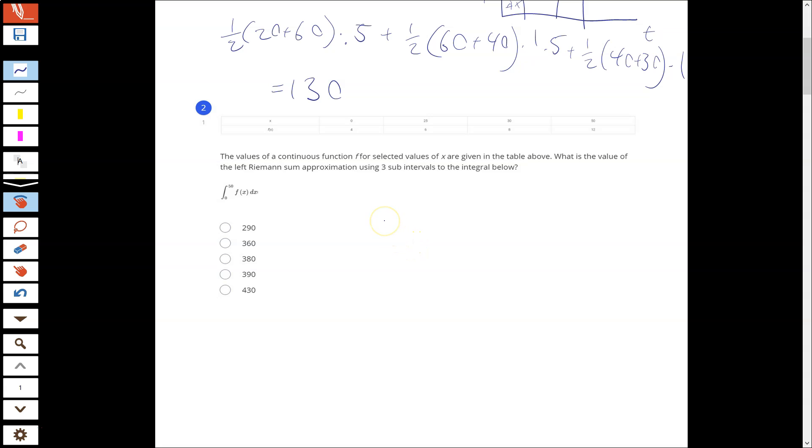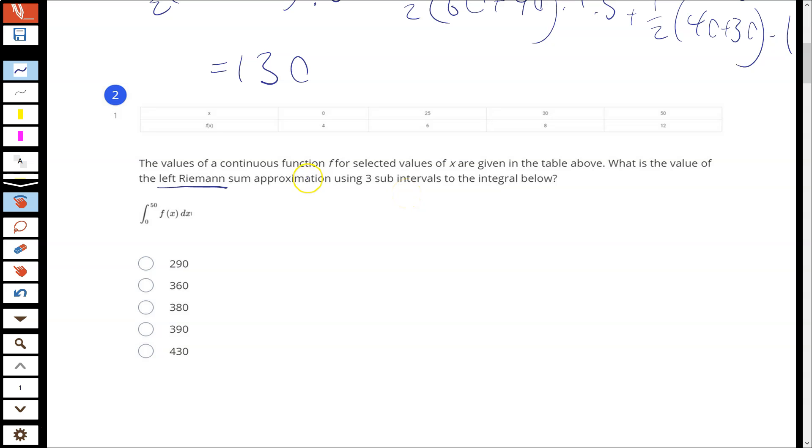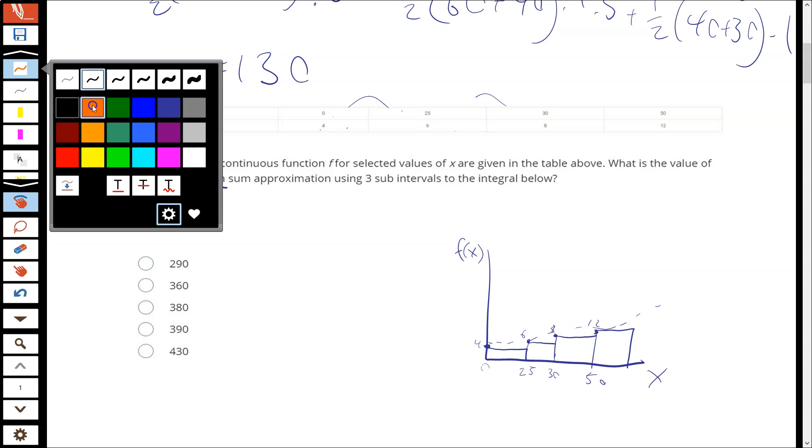Here we want a left Riemann sum. We're going to be making rectangles this time to estimate the area here, and we're going to use three subintervals. Notice it's the same kind as before - our three subintervals go with our four points. I'm going to make a sketch for this one. You don't have to make a sketch for these, but I find it helpful, so you will probably find it helpful too. I've sketched my graph here of f of x. Obviously there would be some kind of curve under all these that we're trying to estimate. I've also labeled it based on the points, so these points here are from the table.